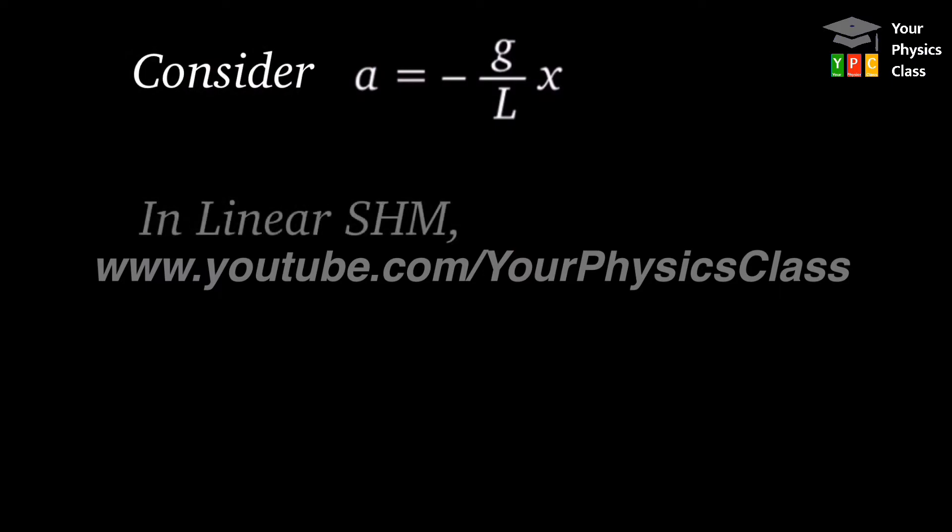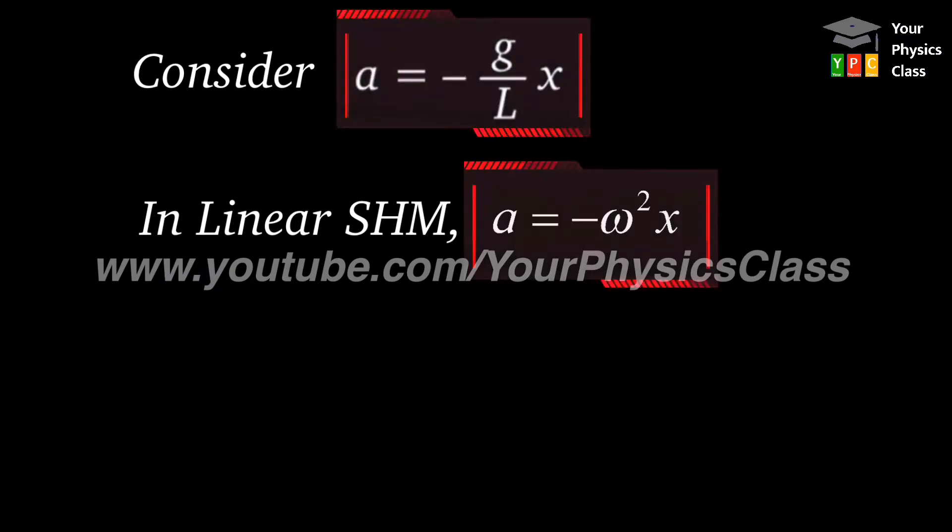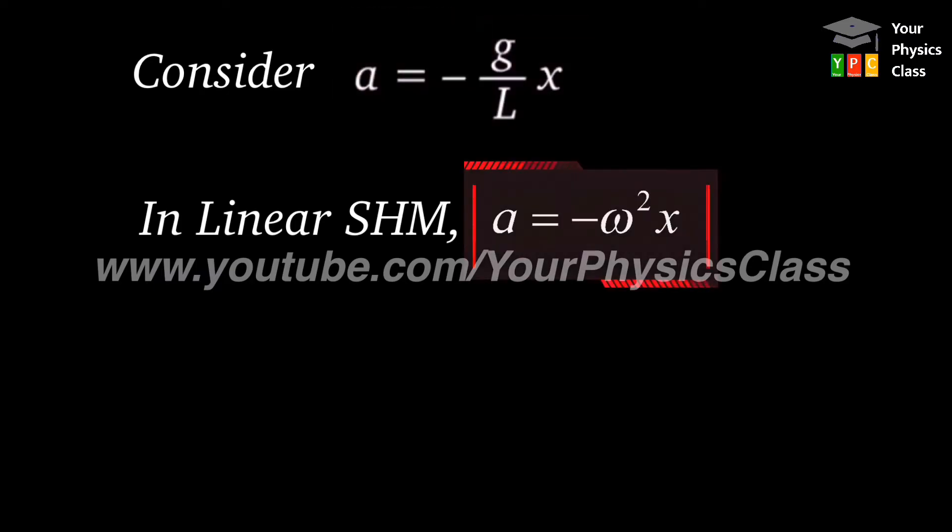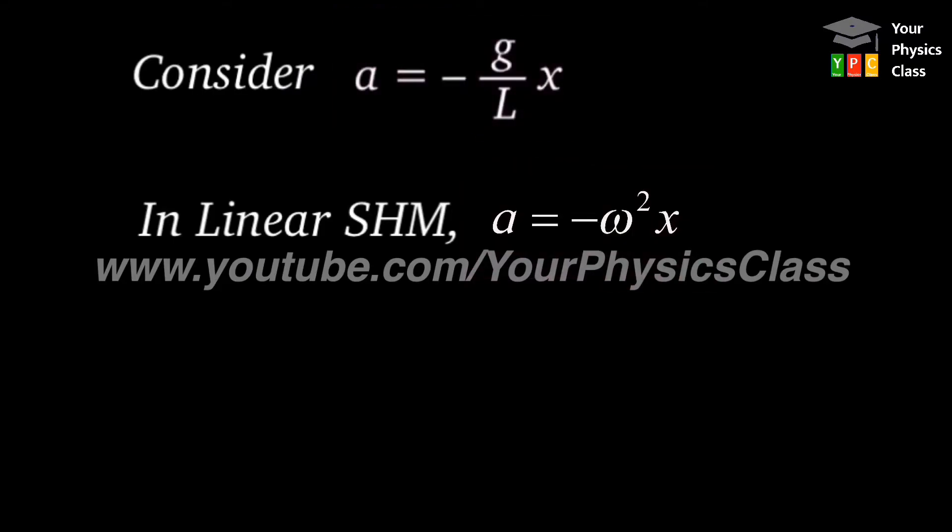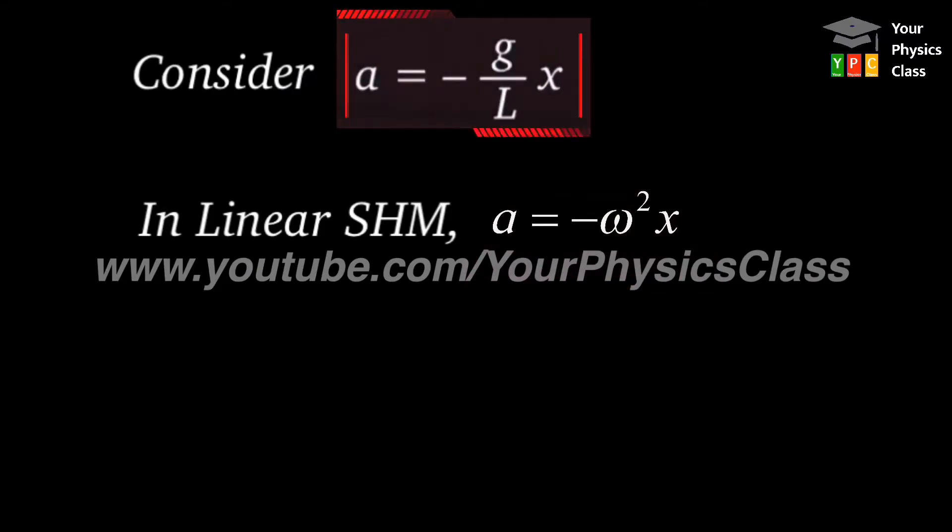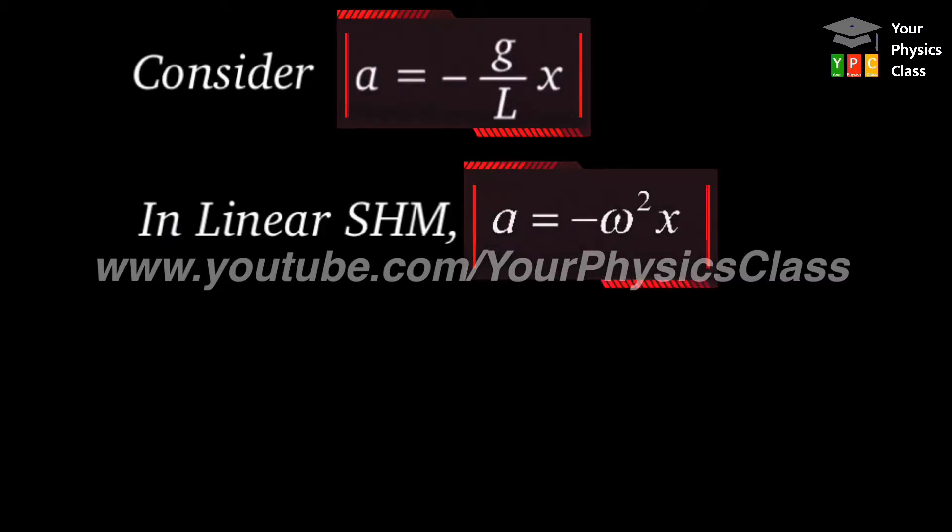Consider the second equation. In linear SHM, the acceleration of the body is given by minus omega square x. Since both equations give acceleration of a particle performing linear SHM, they must be equal.